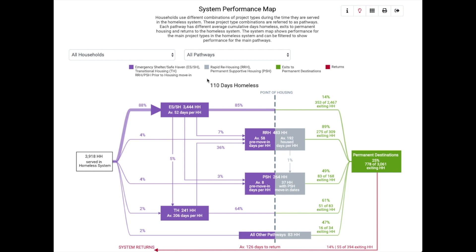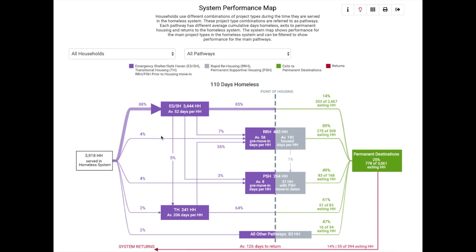Now let's take a closer look at this overall system map. You can see that a total of 3,918 households entered or were served by the system of care during the reporting period. The branches shown here represent the different service pathways in the system of care. For example, 88% of households initially entered emergency shelter or safe havens upon entry to the system. From there, 5% moved to transitional housing, 7% moved to rapid rehousing, and 3% moved to permanent supportive housing. 85% of households were only served by emergency shelter or safe havens, 14% of whom ultimately exited to permanent housing.